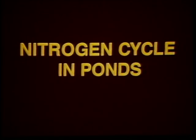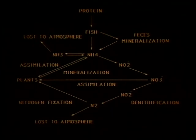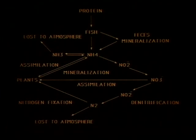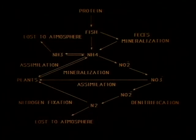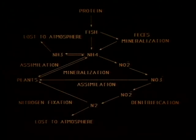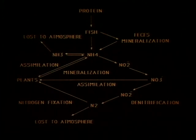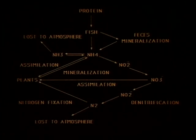Nitrogen is an essential element for all living organisms because it is contained in protein. However, two forms of nitrogen commonly found in ponds, unionized ammonia and nitrite, are toxic to fish at relatively low concentrations. Nitrogen in ponds exists in many different compounds which collectively form the nitrogen cycle. Inputs of nitrogen are from fixation of atmospheric nitrogen by some algae and bacteria, fertilizer runoff into the pond, and from feed in ponds which are fed. This is the largest source of nitrogen in fed ponds. As nitrogen-containing proteins in the feed are digested by fish, ammonia is produced. Ammonia is the nitrogenous waste product of fish and other aquatic animals. Ammonia may be lost to the atmosphere or may be assimilated by plants and phytoplankton, or nitrified to nitrate with nitrite as an intermediate product.